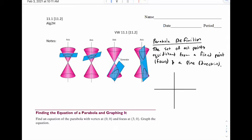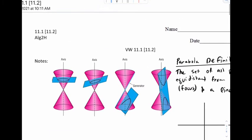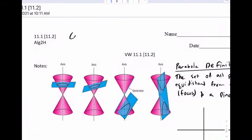Welcome to VW 11.1. In this chapter we're going to study what's called conic sections. If you look at this diagram on your paper, these are all cones and we're going to cut them in various ways.